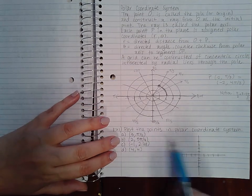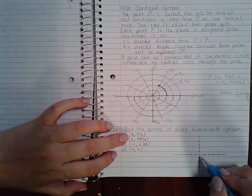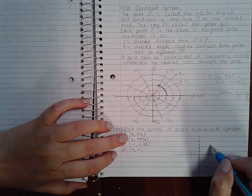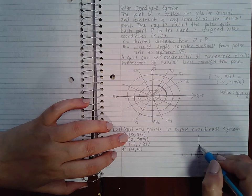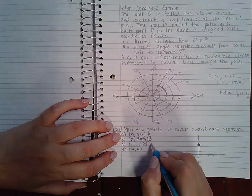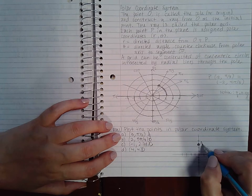So it says plot the points in polar form. So I'm going to go out three units to the right, one, two, three. And then I'm going to go counterclockwise the angle π/2. So I end up here. We'll call this one point A, point B, point C, and point D. So this is A.